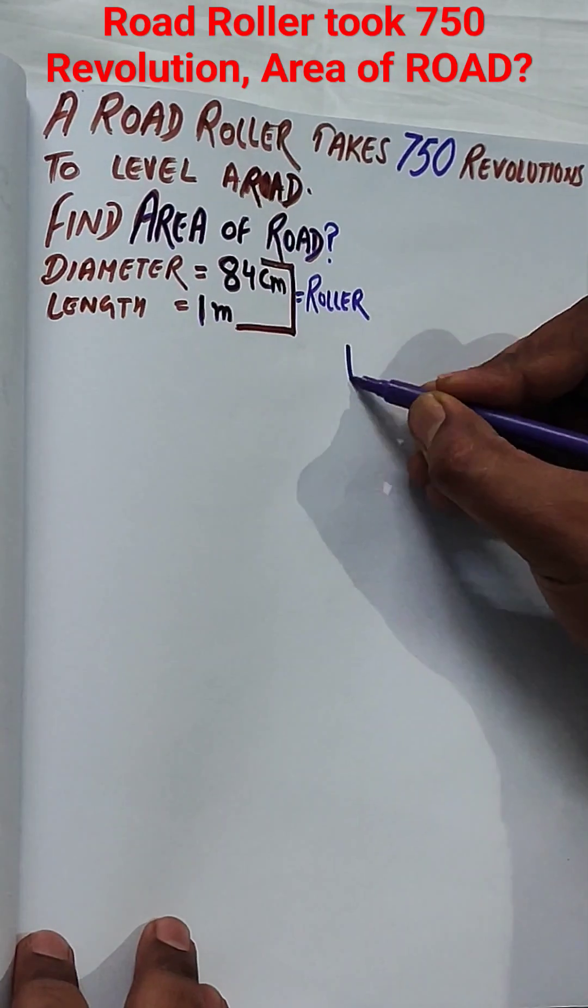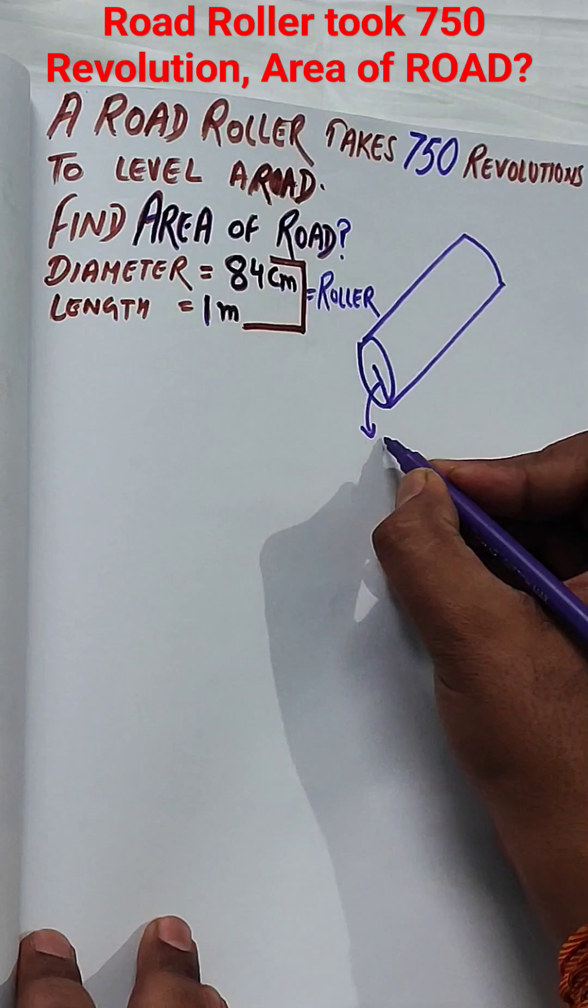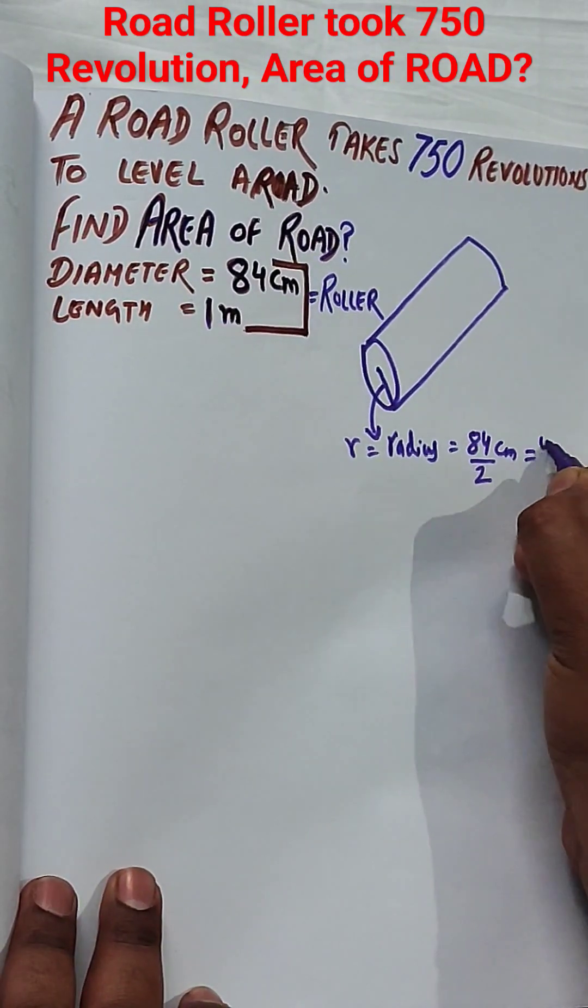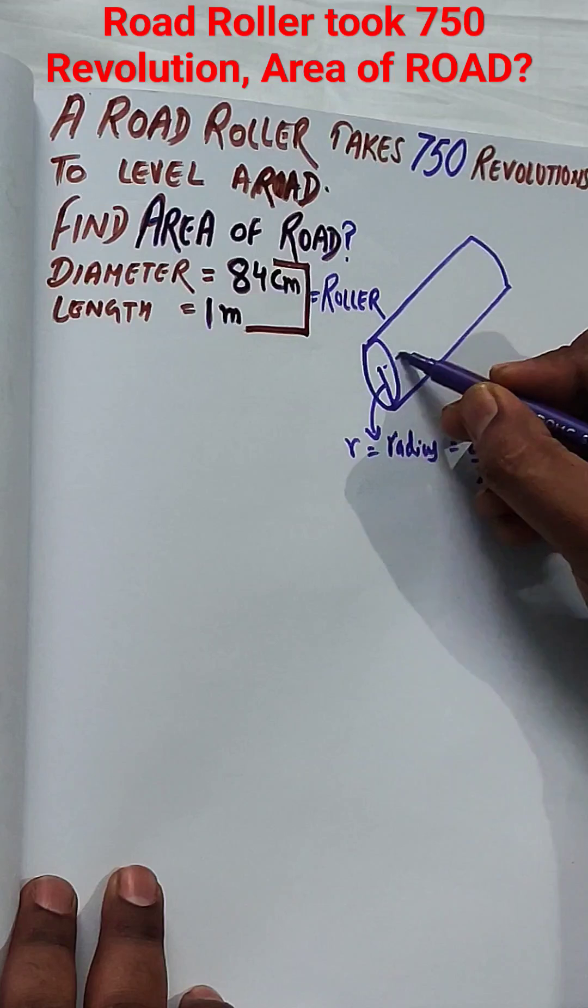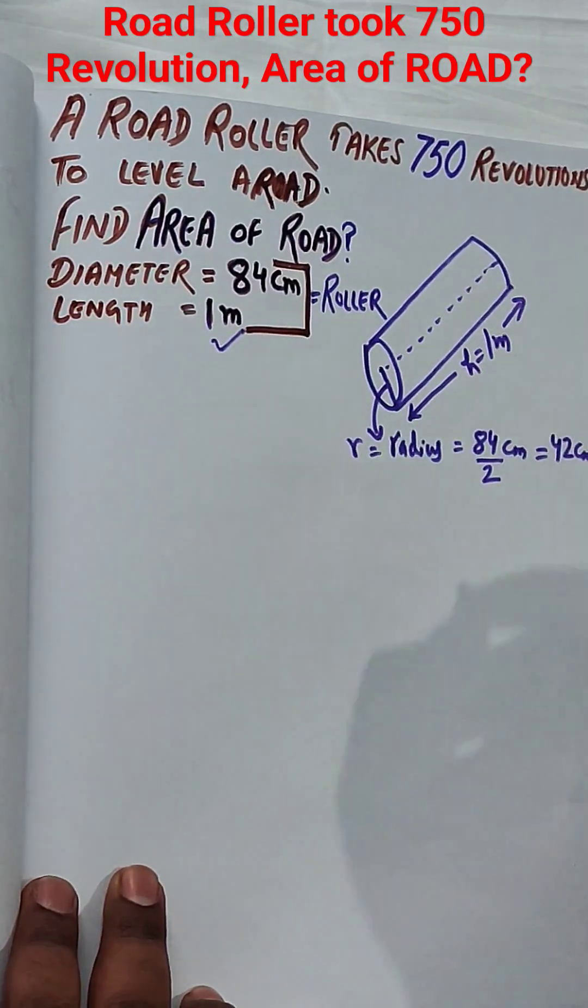In this question, a road roller is given. This is like a cylinder, right? It takes 750 revolutions. The dimensions given are the radius as 84 by 2, since diameter is 84, radius will be 84 by 2 centimeters, which is equal to 42.